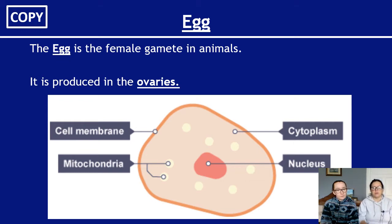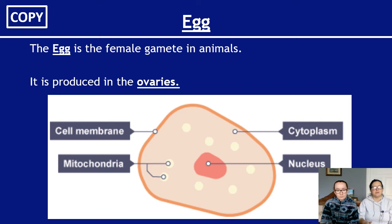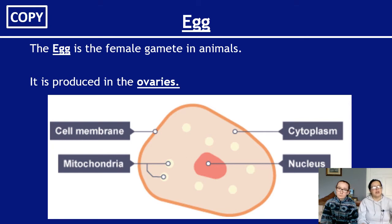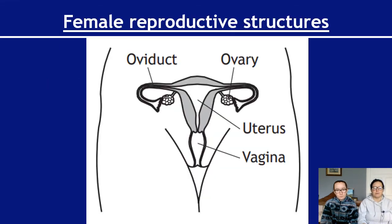The egg is the female gamete in animals. It's produced in the ovaries — the important site of production of ova or eggs. It has a cell membrane around the outside, a nucleus in the middle, mitochondria, ribosomes, and everything a typical basic animal cell contains. As an extra fact, it's one of the biggest cells in the body — about the size of a full stop — and can actually be seen with the naked eye.